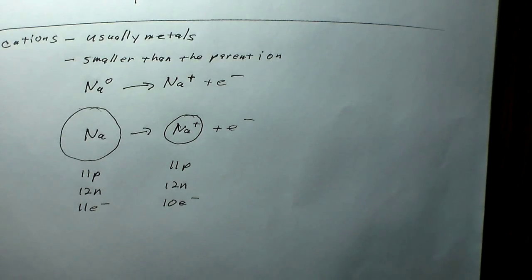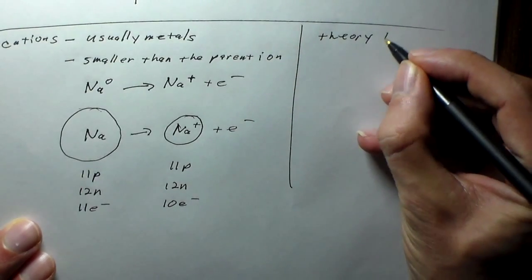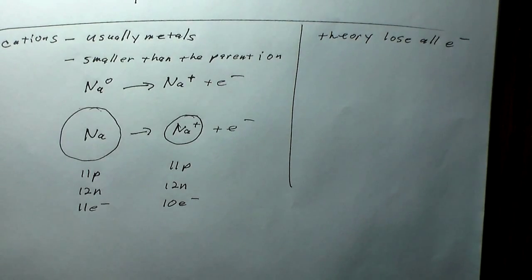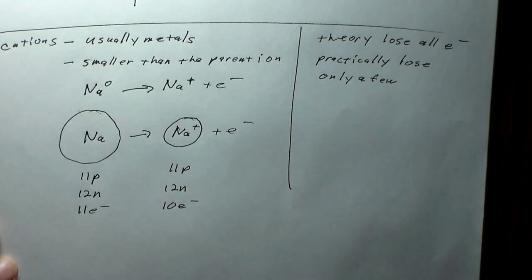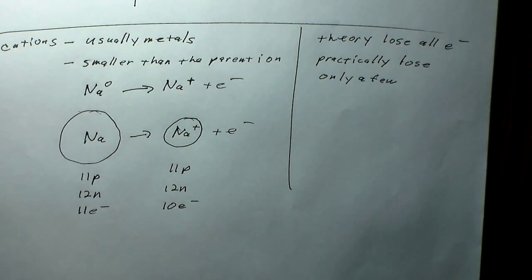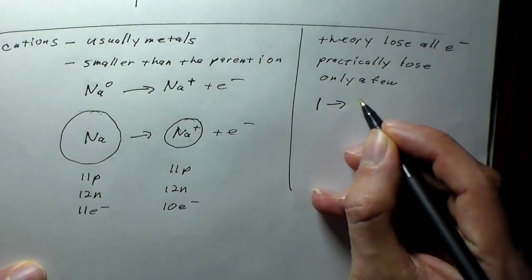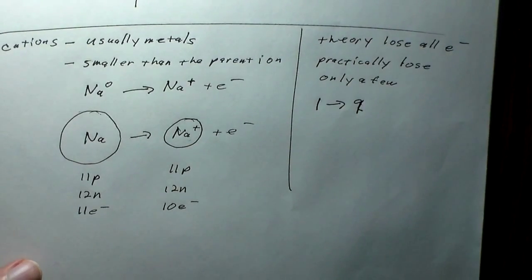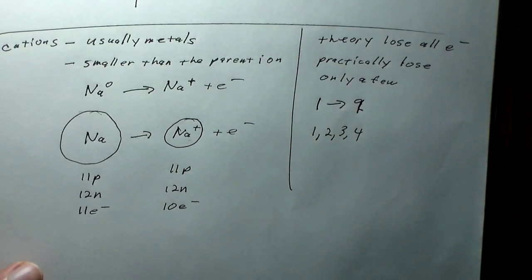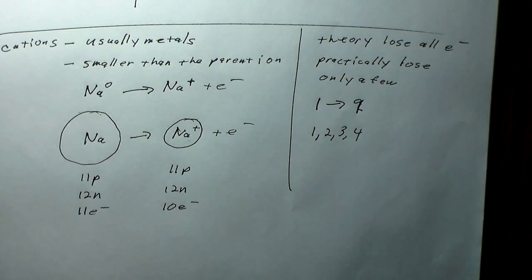As for the charges that cations can actually have — theoretically you can lose all your electrons. If you supply enough energy to a sodium atom, you could get a sodium +11 ion. But practically speaking, you're only going to lose a few, because in a normal chemical reaction there's only a certain amount of energy available, and as you try taking more electrons off, the atom holds on to the remaining ones tighter and tighter. The numbers actually observed range from +1 to +9, but generally we work with +1, +2, +3, or +4.